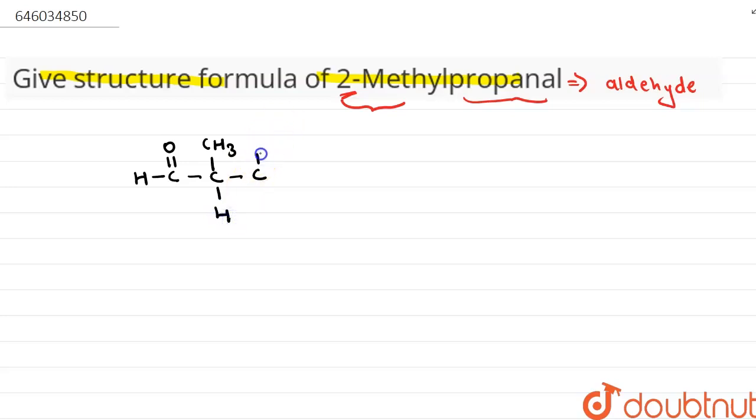That is, this carbon will have one hydrogen and this carbon will have three hydrogens. So here we can write it clearly like this: here we have C double bond O, here we have hydrogen, here we have CH, here we have a methyl group, and here we also have a methyl group.